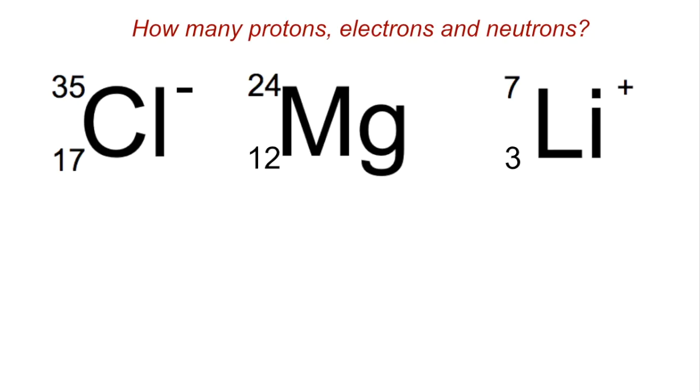The proton number is the easiest one to start with. That's just the atomic number. So 17, 12 and 3.